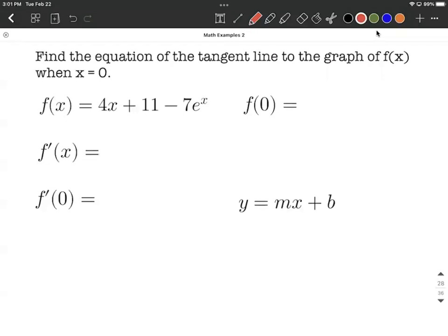We need two components to get the equation of this tangent line. We need an ordered pair, a point on our graph when x = 0. To get that, I'm going to evaluate our original function at zero.